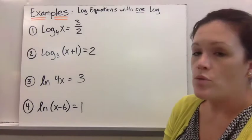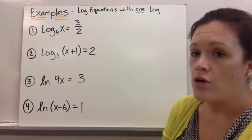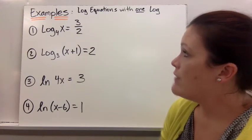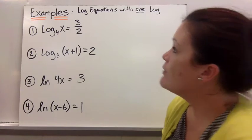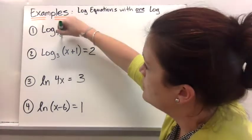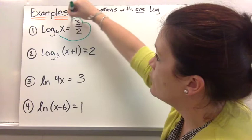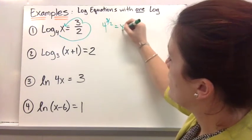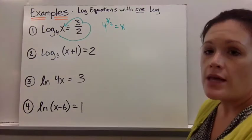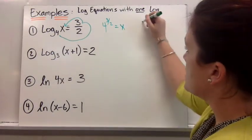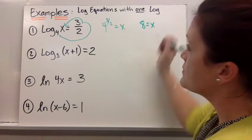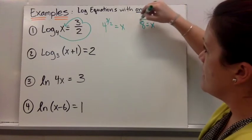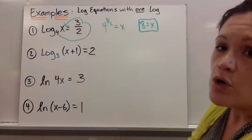On the first board I have the simple ones where you have one log, or one natural log, and you've got to rewrite it and solve. So if I have log base 4 of x equals 3 halves, I would first rewrite it in exponential form: 4 to the 3 halves power is equal to x. You can type that in a calculator or work it out by hand and you should get x equals 8. When you plug 8 back in, you're not taking the log of a negative, so it's fine. That's all you're checking for.